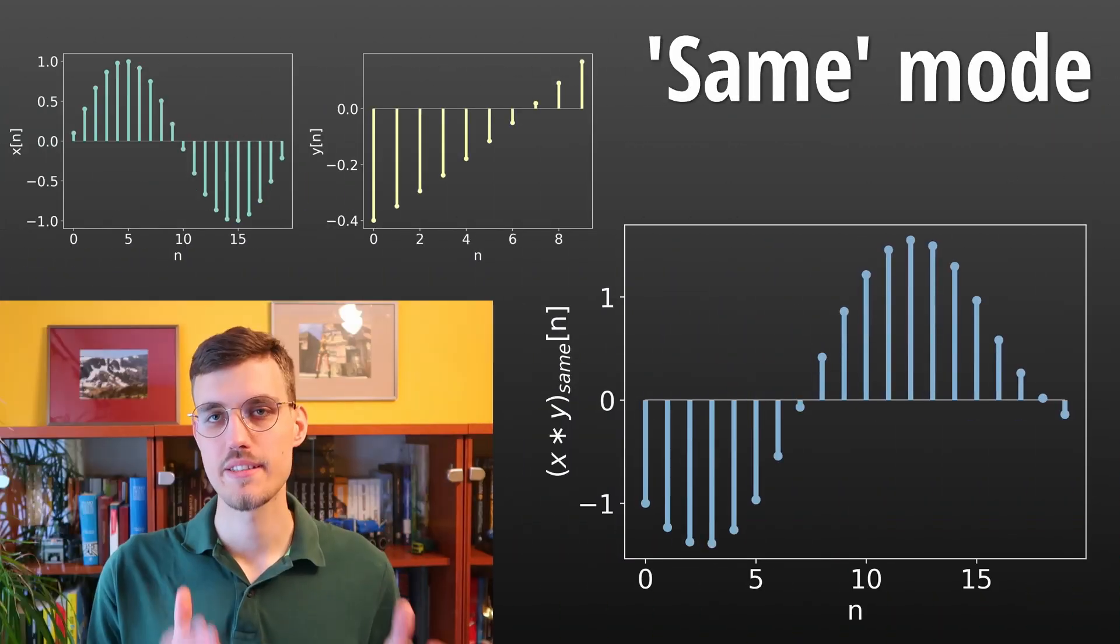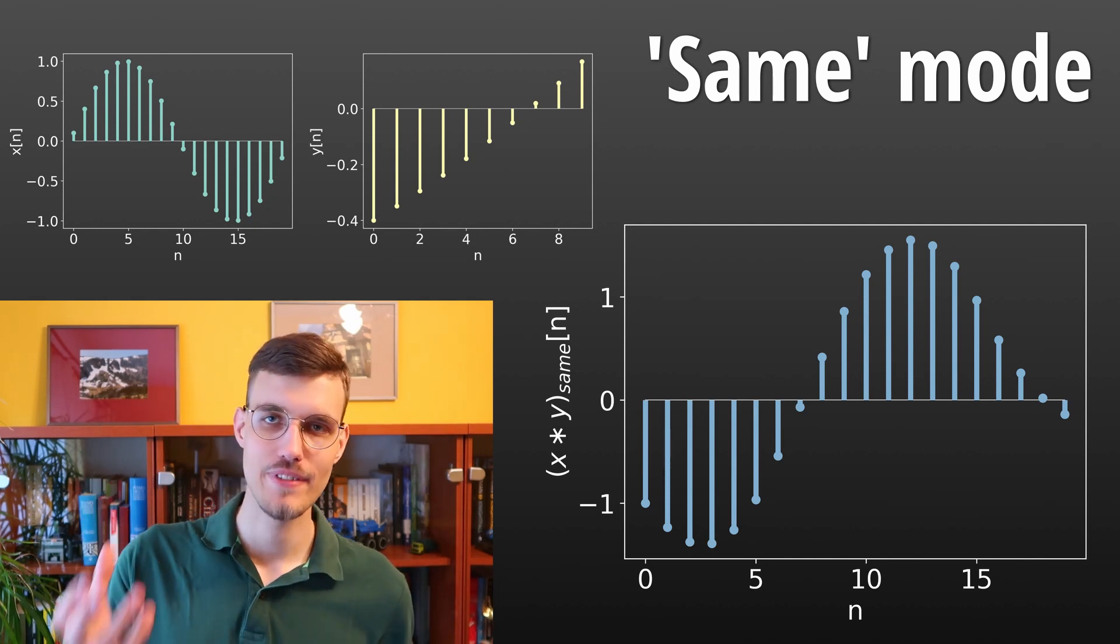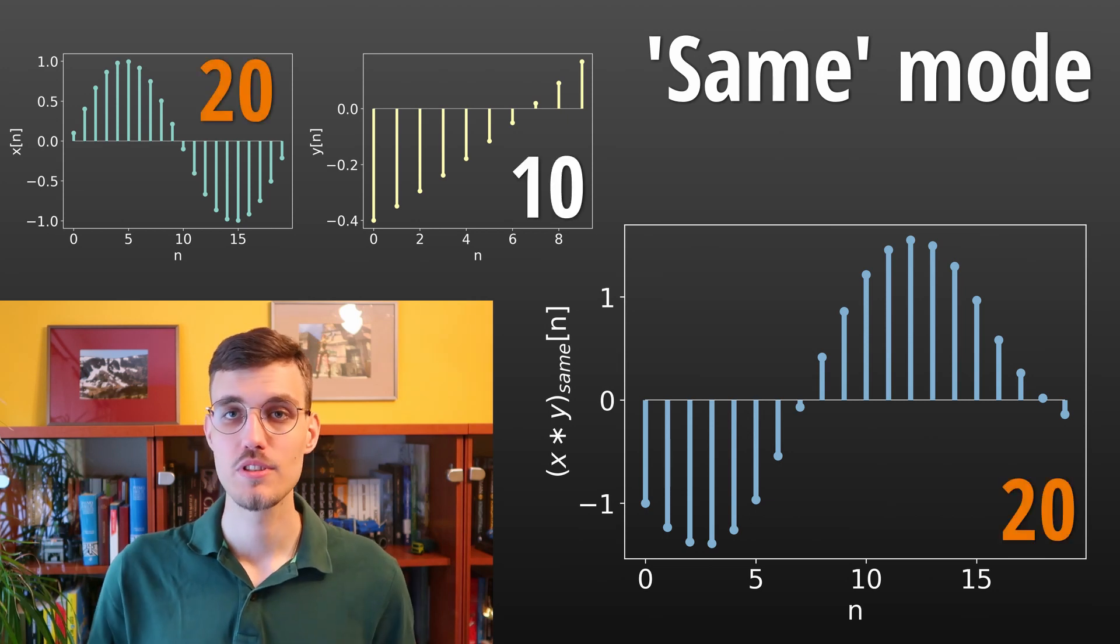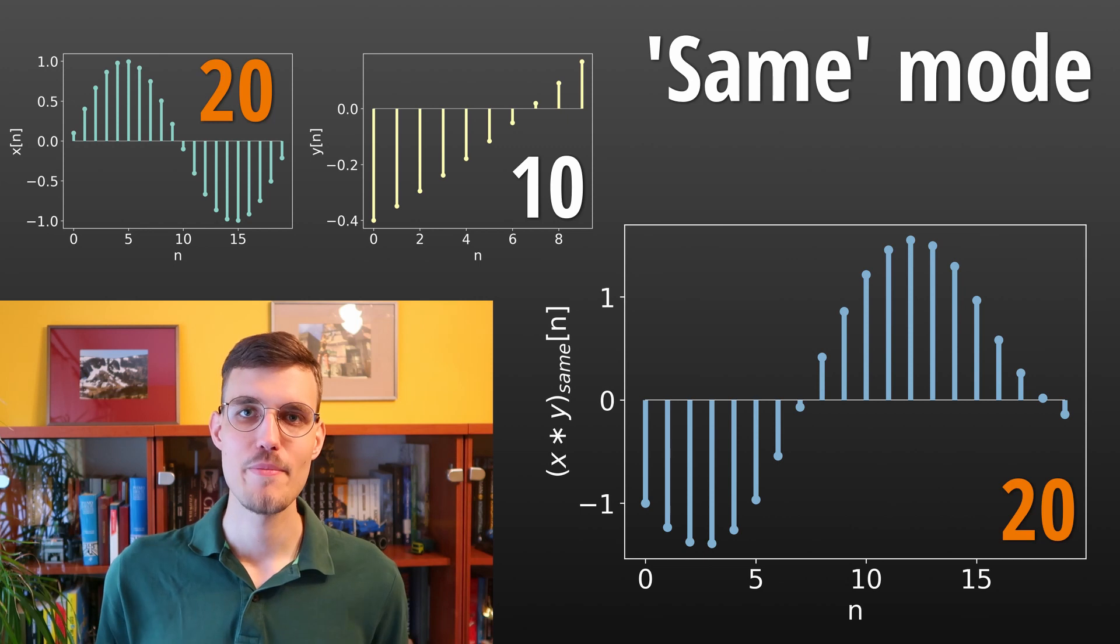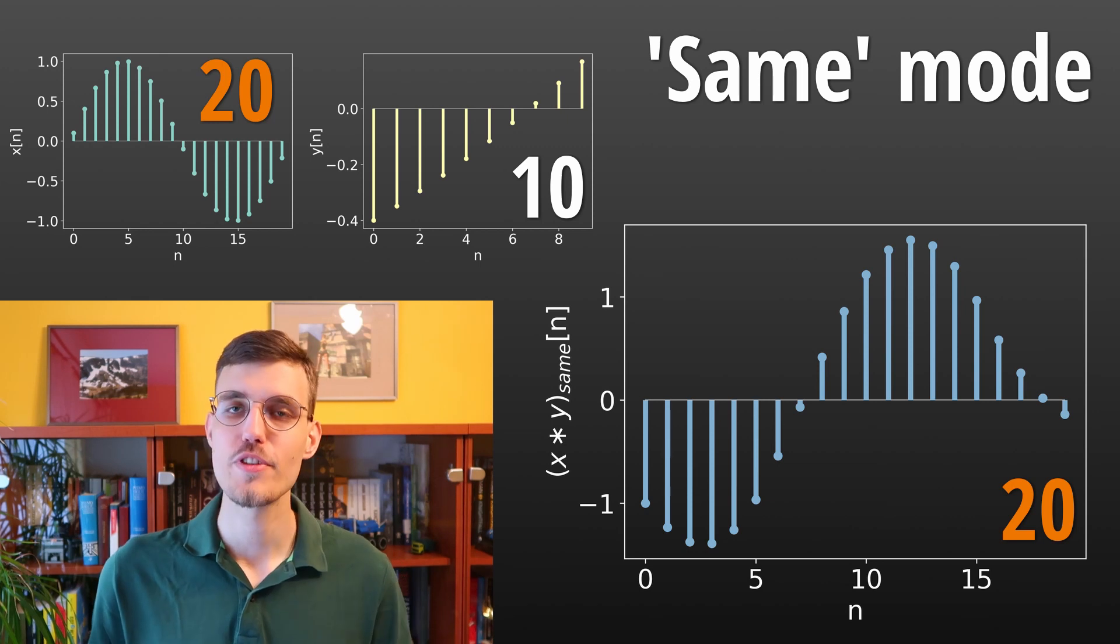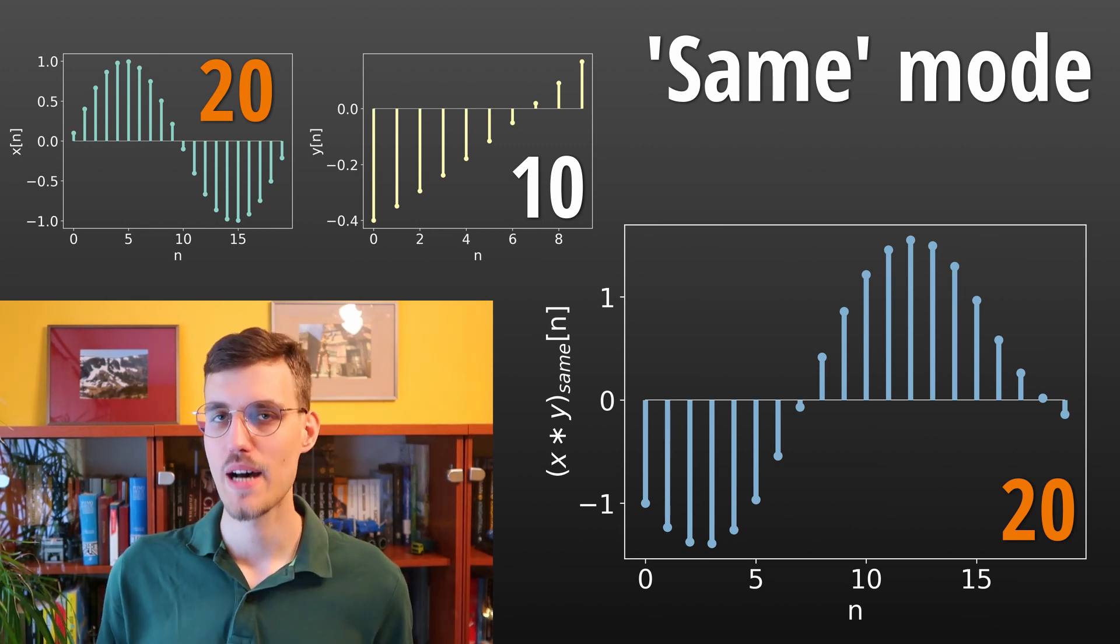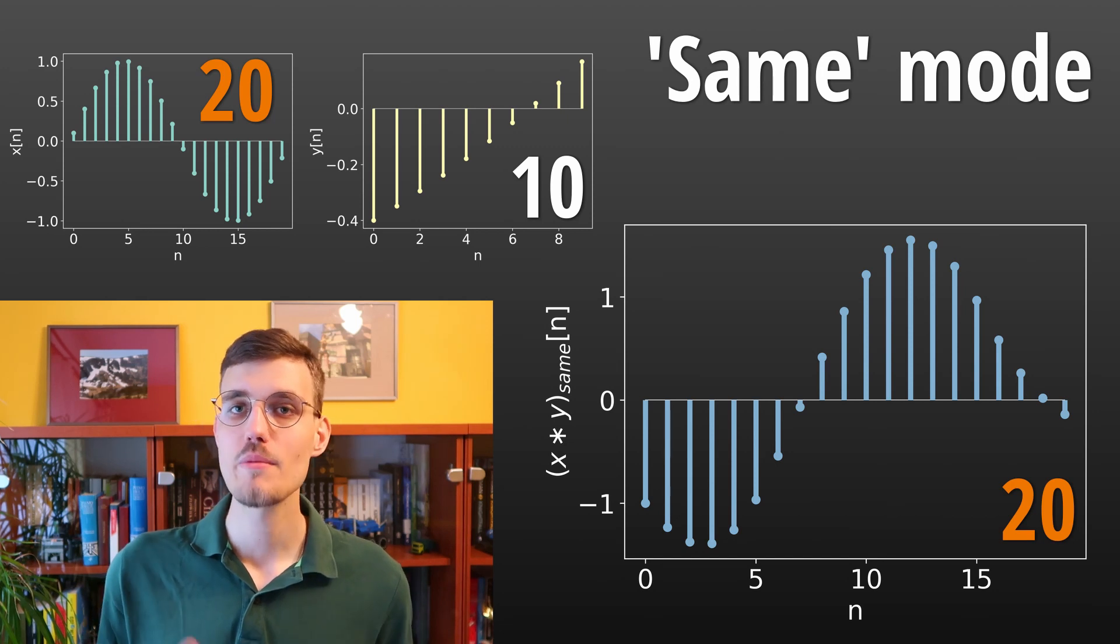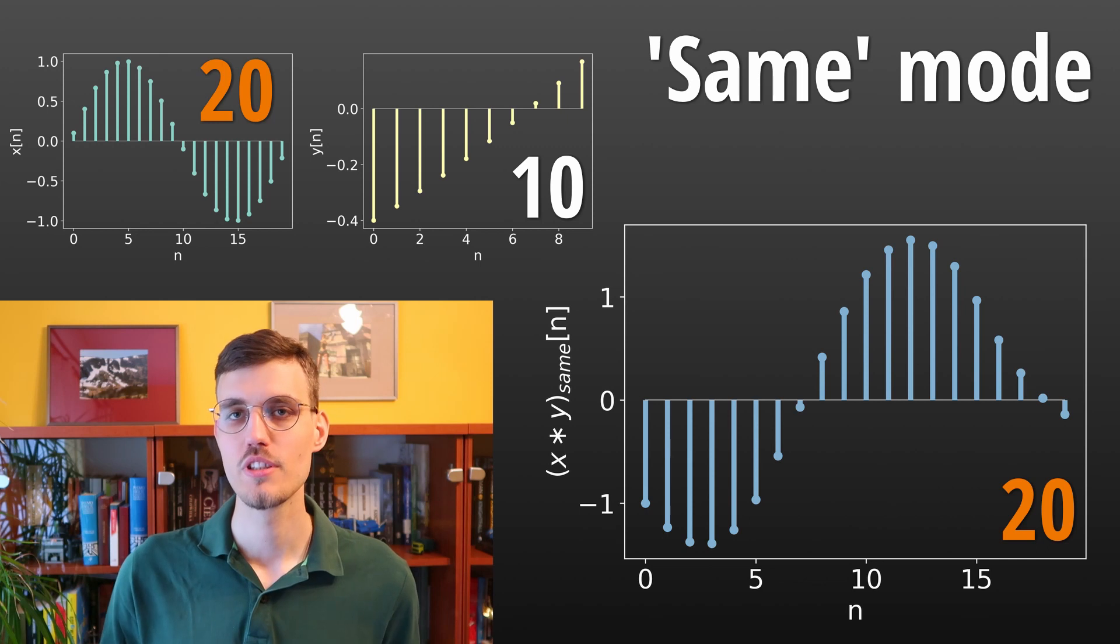The same mode of convolution is a middle ground between the full mode and the valid mode. In this mode, the length of the output of the convolution is the same as the length of the longer signal, in case of NumPy or SciPy, or the length of the first supplied signal, as in the case of MATLAB. This mode comes in handy when we want to keep the length of the applied convolution constant.